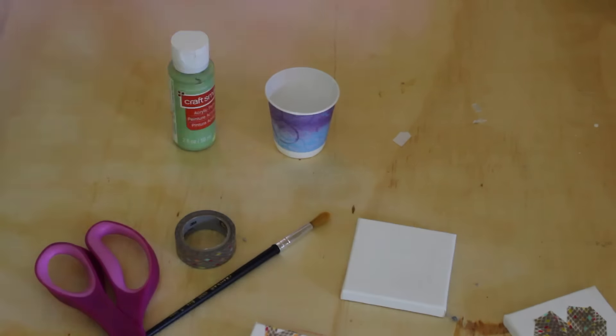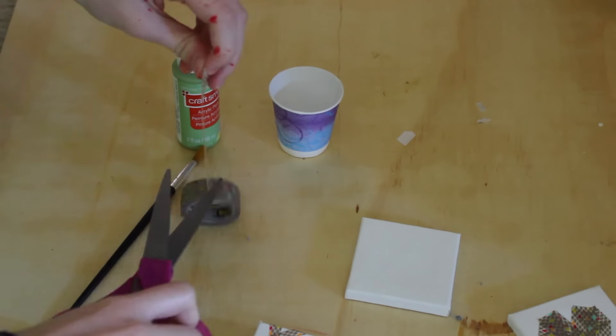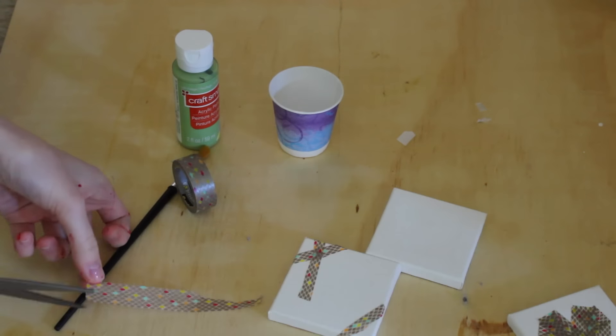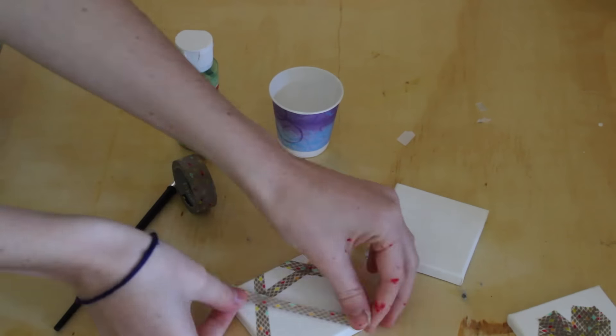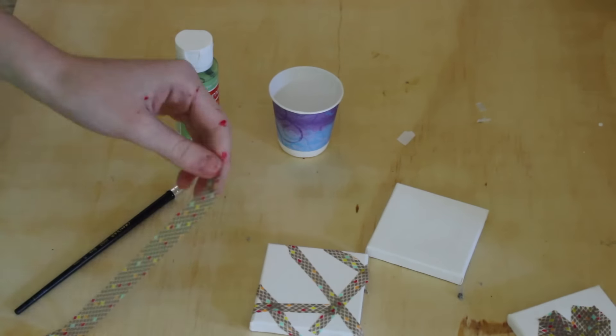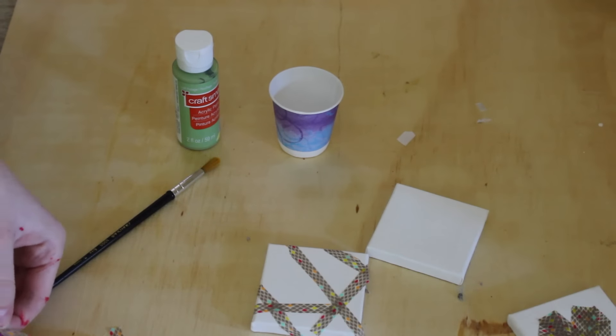What you're going to do is take the washi tape and what I did was I cut the washi tape in half so that they were not as thick. Then I just put them on the canvas to make a cool design.